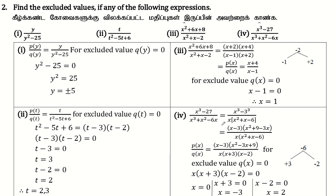The first thing is x is 3.4 second sum. Find the excluded values, if any, of the following expressions. The first thing is y by y square minus 25. The excluded value is 0.